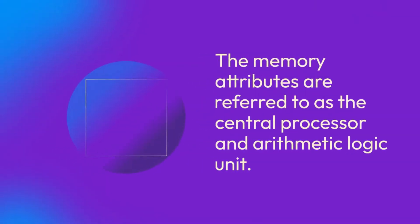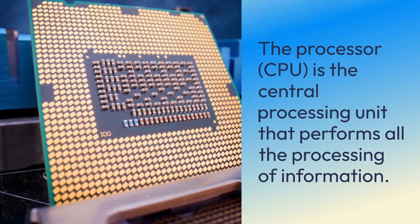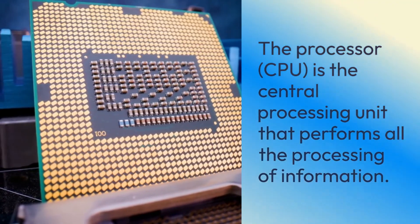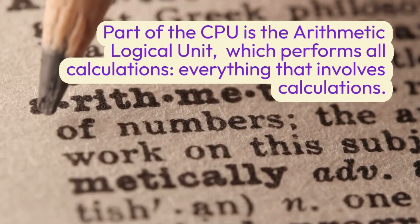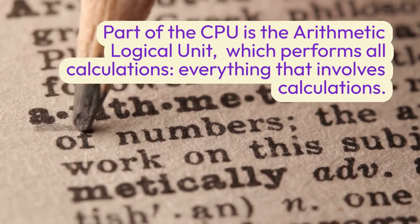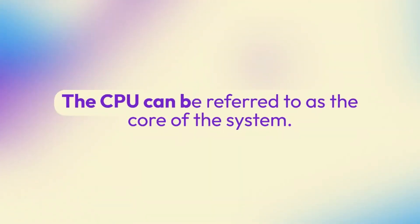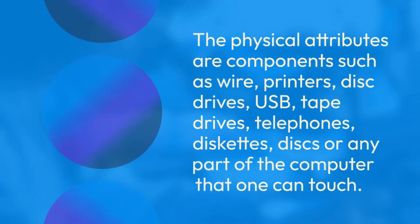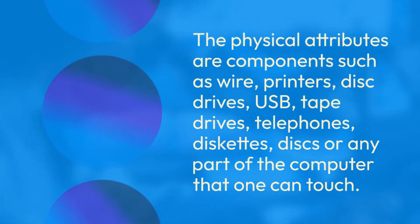The memory attributes are referred to as the central processor and arithmetic logic unit. The processor — CPU, or central processing unit — performs all the processing of information. Part of the CPU is the arithmetic logical unit, which performs all calculations. The CPU can be referred to as the core of the system. The physical attributes are components such as wires, printers, disk drives, USB, tape drives, telephones, diskettes, disks, or any part of the computer that one can touch.